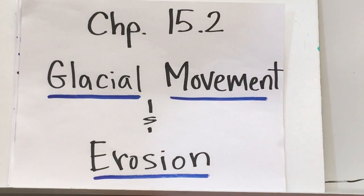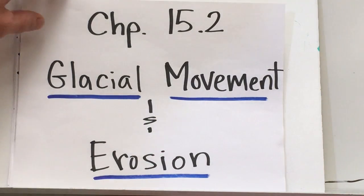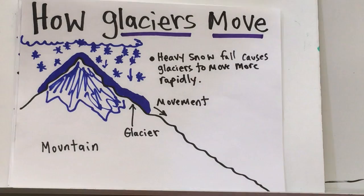Today we're going to talk about chapter 15.2, glacial movement and erosion. Erosion is a transport or movement of sediment. So, how glaciers move.